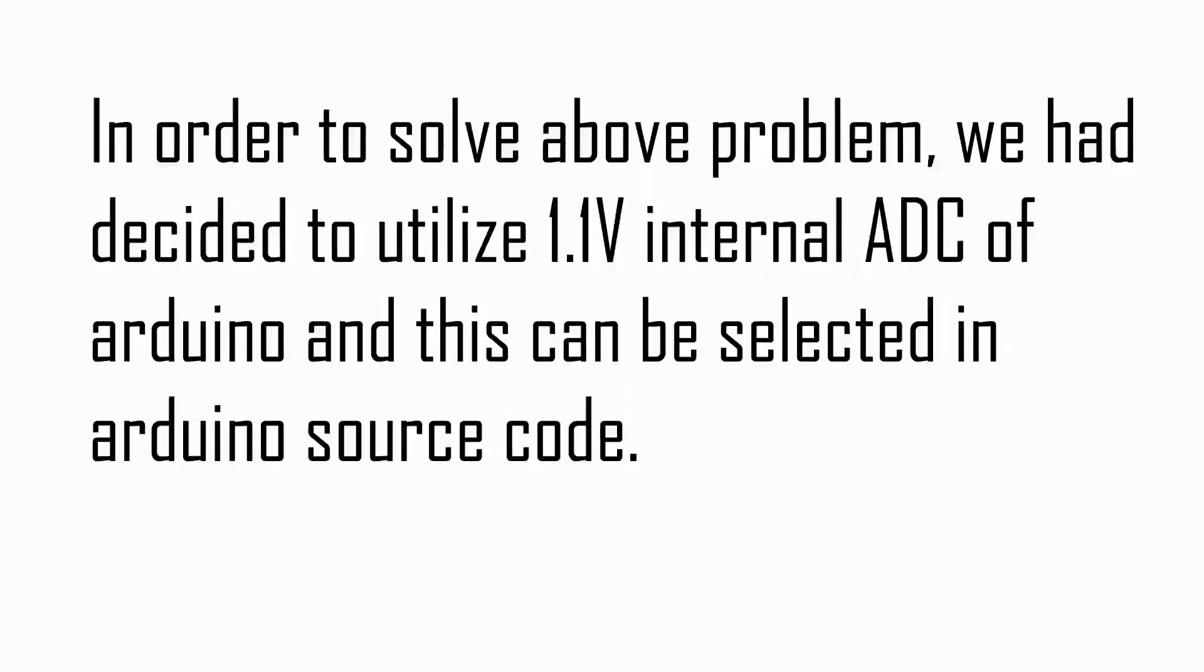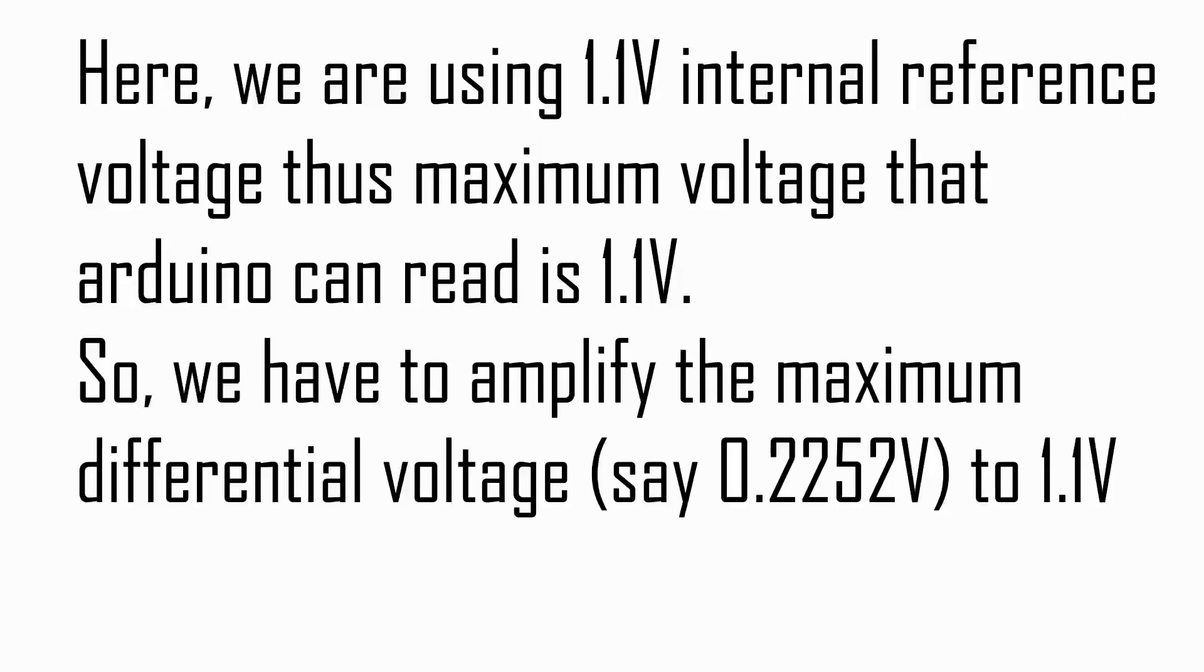In order to overcome these two problems, we are using 1.1 volt internal ADC of Arduino, and this can be selected in Arduino source code. Here we are using 1.1 volt internal reference voltage. Thus, maximum voltage that Arduino can read is 1.1 volt. So we have to amplify maximum differential voltage, 0.2252 voltage, to 1.1 volt.